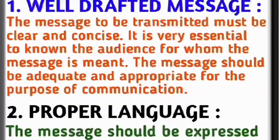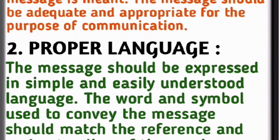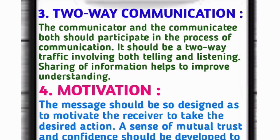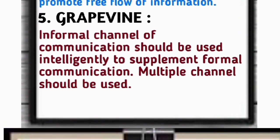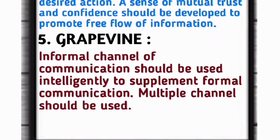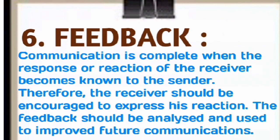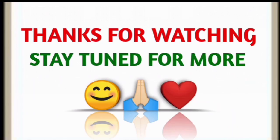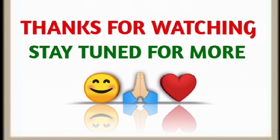So these are the six ways of overcoming barriers to communication: number one Well-Drafted Message, number two Proper Language, number three Two-Way Communication, number four Motivation, number five Grapevine, and number six Feedback. I hope everything is clear. Thanks for watching — stay tuned. This chapter is complete, and next I'll start chapter number two. Thank you so much — till then, keep learning.